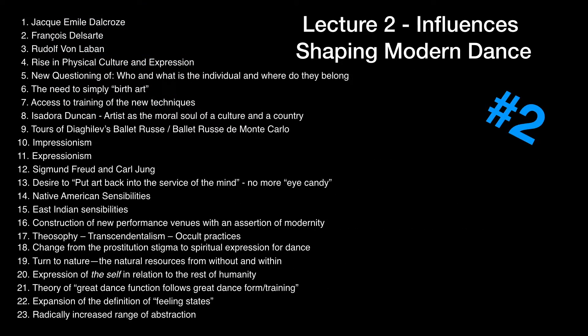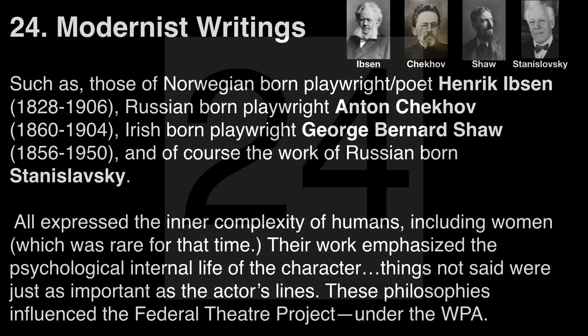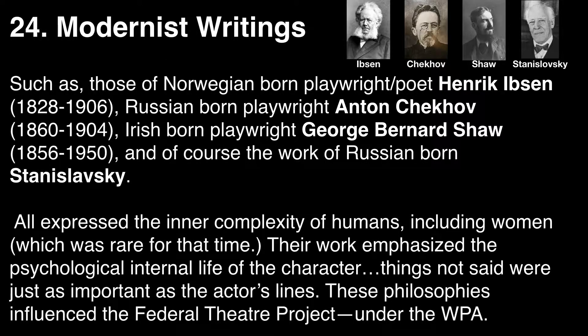In the second lecture, I submitted 23 influences shaping American modern dance. What I didn't mention in class—and I would list this as influential factor number 24—are the modernist writings such as those of Norwegian-born playwright Henrik Ibsen, Russian-born playwright Anton Chekhov, Irish-born playwright George Bernard Shaw, and the work of Russian-born Stanislavski. All of these writers expressed the inner complexity of humans, including women, which was rare for that time. Their work emphasized the psychological, internal life of a character. These philosophies influenced the Federal Theater Project under the WPA.